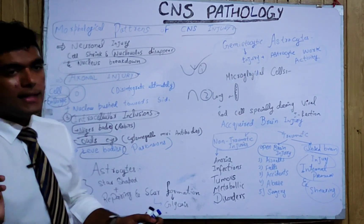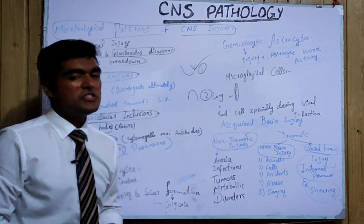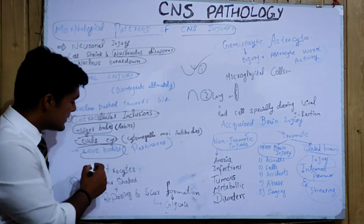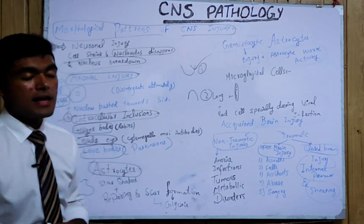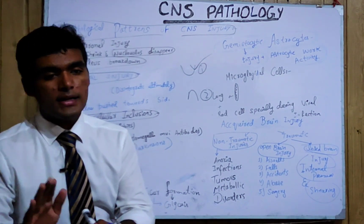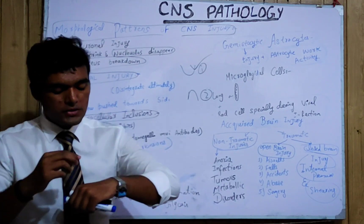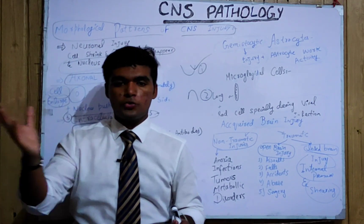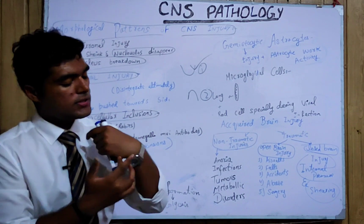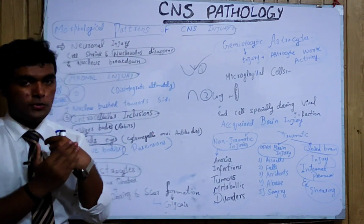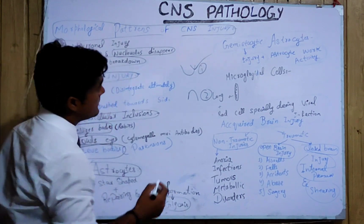Now talking about cells and moving towards brain injury cells. First is the astrocyte — a star-shaped cell having a role in cell repairing and scar formation. If there is an injury and scar formation occurs in that place, we name that process gliosis. So the process of scar formation in CNS is called gliosis.